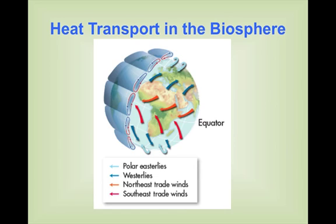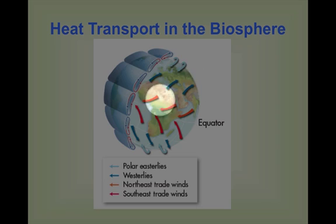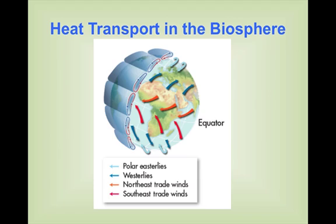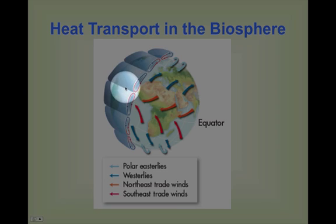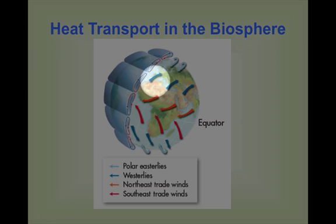Heat transport happens in two main ways: with wind and with water. Wind directions are determined by something called the Coriolis effect. When wind moves in a certain direction, because of the Earth spinning, it ends up changing direction. The westerlies come out of the west and push east, and the northeast trade winds come out of the northeast pushing toward the west. These would have been winds that people from Europe caught to sail to the New World, and the westerlies would be what they used to return to Europe.